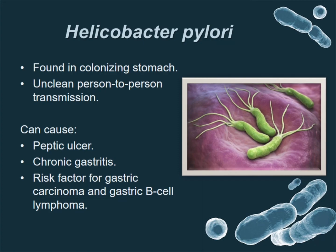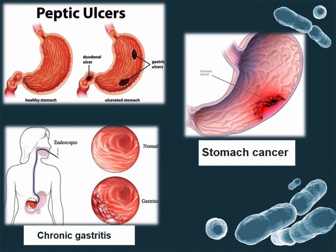Helicobacter pylori — sounds like helicopter! They can be found in the stomach of patients with ulcer, and are transmitted from person to person due to poor sanitization. Helicobacter pylori causes peptic ulcer, chronic gastritis, and can even cause basal lymphoma.